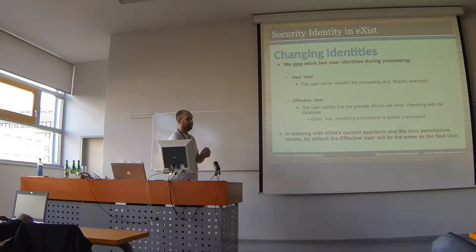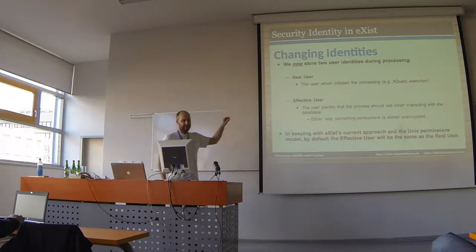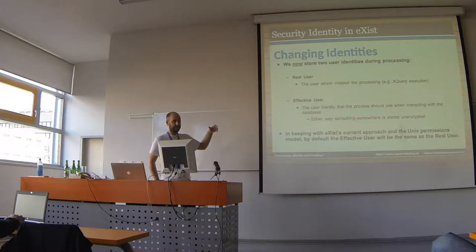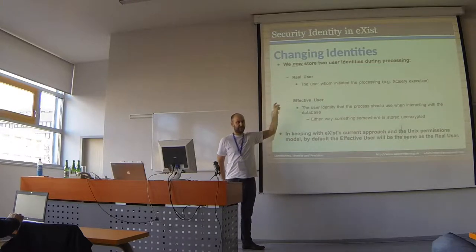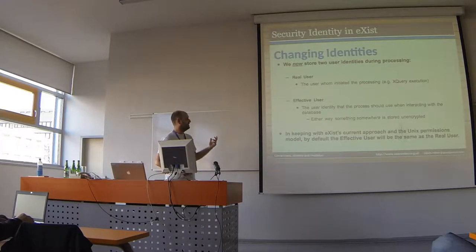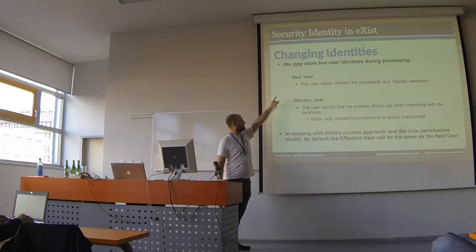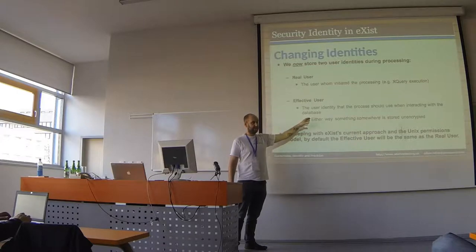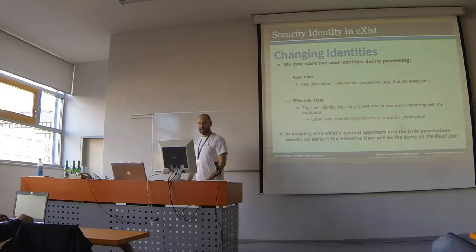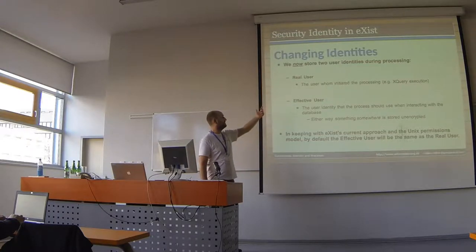What we do now is store two identities during processing. If you look at Unix, it stores more than two identities, but it definitely has these two: the real user and the effective user. The real user is who initiated the process — the real person. The effective user is what you've effectively escalated your privileges to. You start the query as the real user; it runs either as the real user or, if you do some sort of escalation, as the effective user. By default, to maintain backwards compatibility, the effective user is the same as the real user unless you escalate.